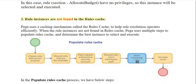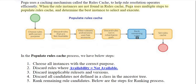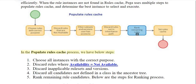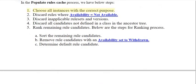Scenario 2: Rule instances are not found in the rules cache. PEGA uses a caching mechanism called the rules cache to help rule resolution operate efficiently. When rule instances are not found in the rules cache, PEGA uses multiple steps to populate the rules cache and determine the best instance to select and execute. In the populate rules cache process, the steps are: 1) choose all instances with the correct purpose.